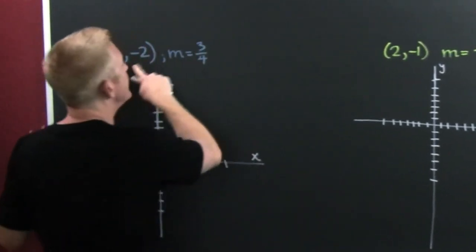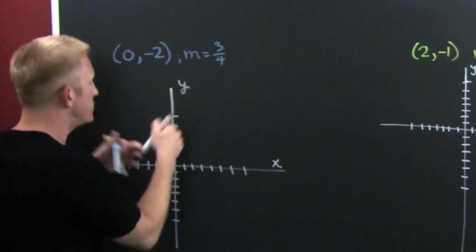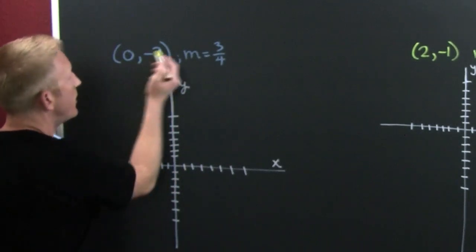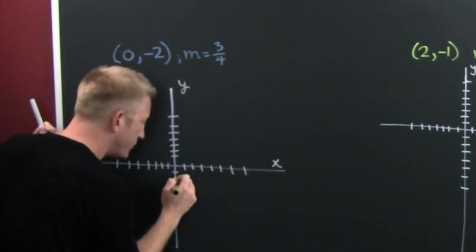So it tells you where to start and it tells you where to go. So you start there. Where? At zero minus two. At zero minus two right there.